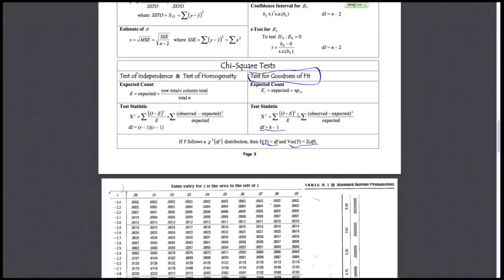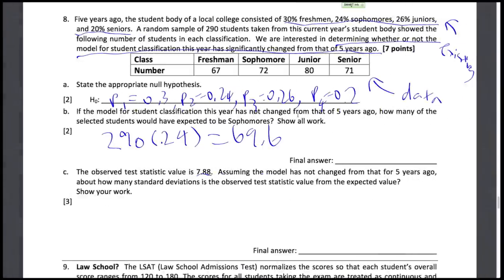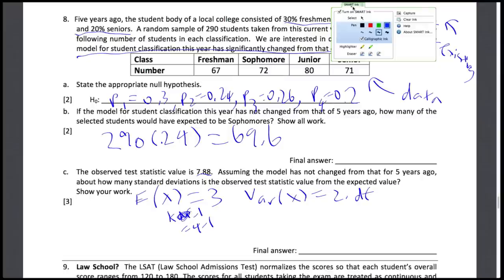So given those formulas, we can write E(X) equals three, variance of X equals two times... sorry, so this comes from k minus one equals four minus one. Sorry, this is k. Right, so let me just clean that up a bit.